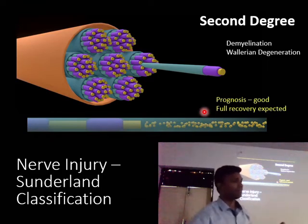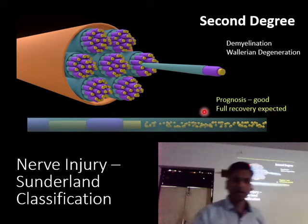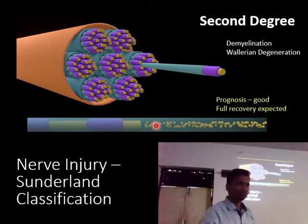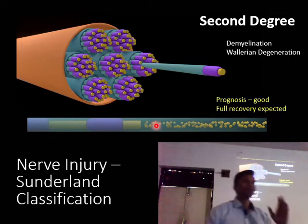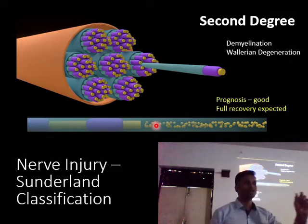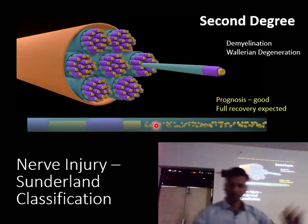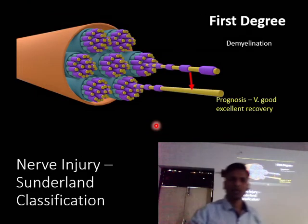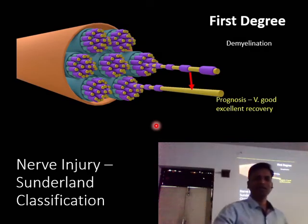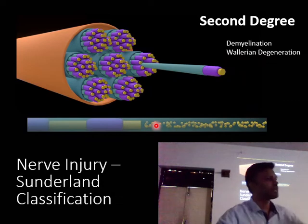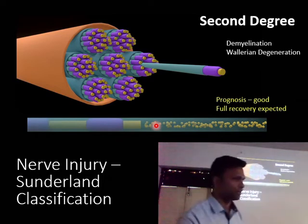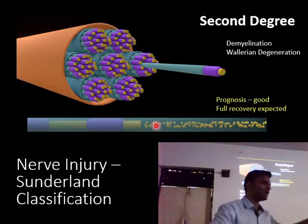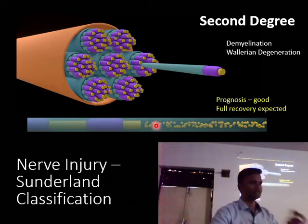Full recovery in second degree is expected within three to six months. After Wallerian degeneration, the residue is removed and proliferation/regeneration of the nerve occurs at a maximum of one millimeter per day. To recap: first degree has demyelination only; second degree has demyelination plus Wallerian degeneration. In both cases, endoneurium is intact, so full recovery is expected — one to three months for first degree, three to six months for second degree.